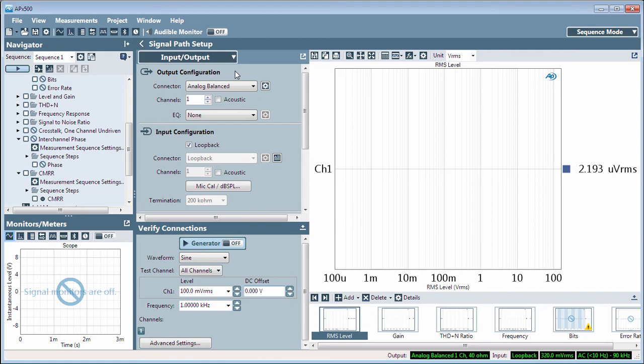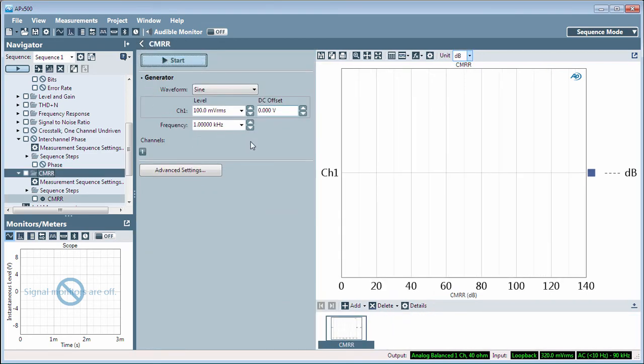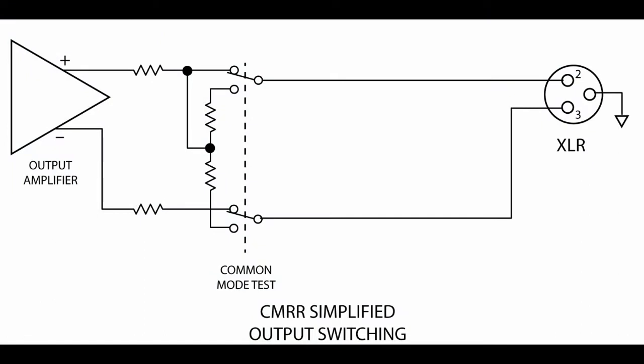Connect an analog-balanced output to a device under test DUT differential or balanced input. When you click Start, an ordinary, that is, differential mode, level measurement is made.